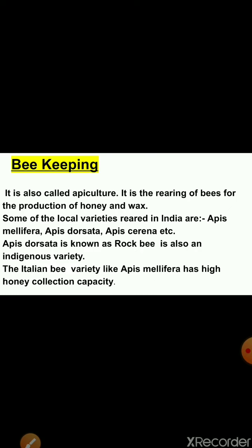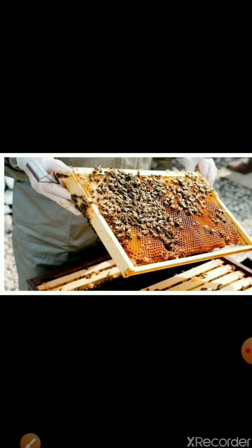The next topic is beekeeping, also called apiculture. It is the rearing of bees for the production of honey and wax. Some local varieties reared in India are Apis mellifera, Apis dorsata and Apis cerana. Apis dorsata is also known as the rock bee. The Italian bee variety, Apis mellifera, has high honey collection capacity. You can see here a picture showing beekeeping.